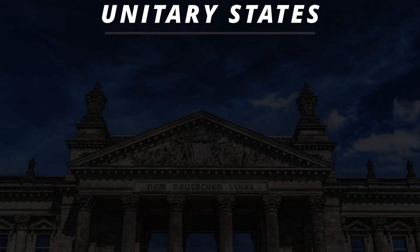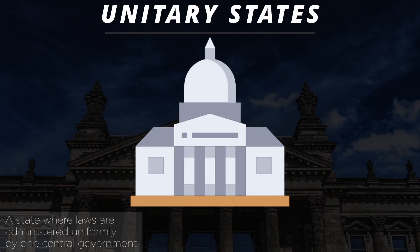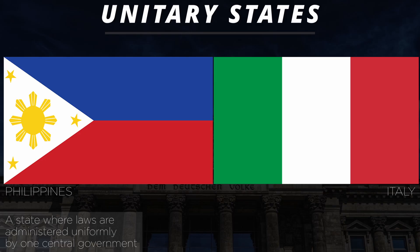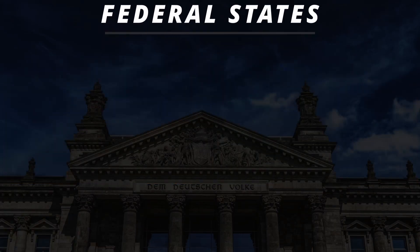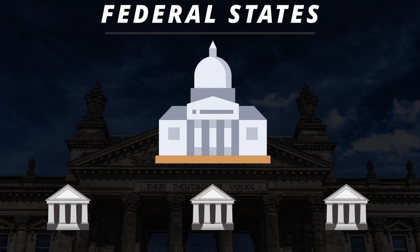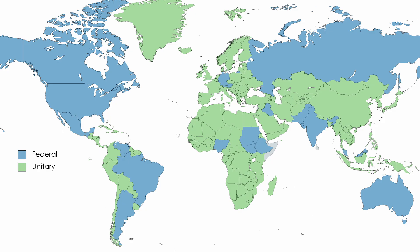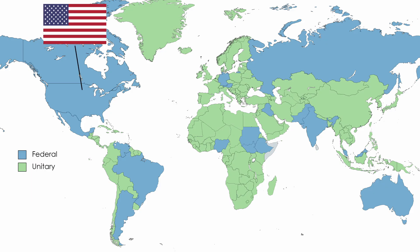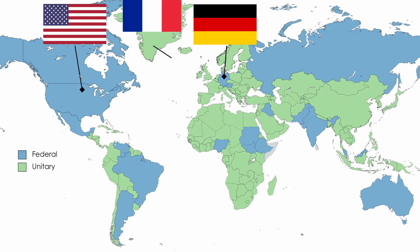Moving on, we have various forms of government. Starting with the unitary state, which is when power is held primarily by the central government, aka the federal government. This form is generally seen in smaller homogeneous countries where there isn't much diversity. Then there's the federal state, which is when power is shared between the federal and regional governments — like the United States — and these states are generally bigger with quite a bit of diversity. Countries with federal governments are, for the most part, the biggest in physical size, while unitary states tend to be smaller. Examples of federal states include the United States and Germany, and examples of unitary states are France and Japan.